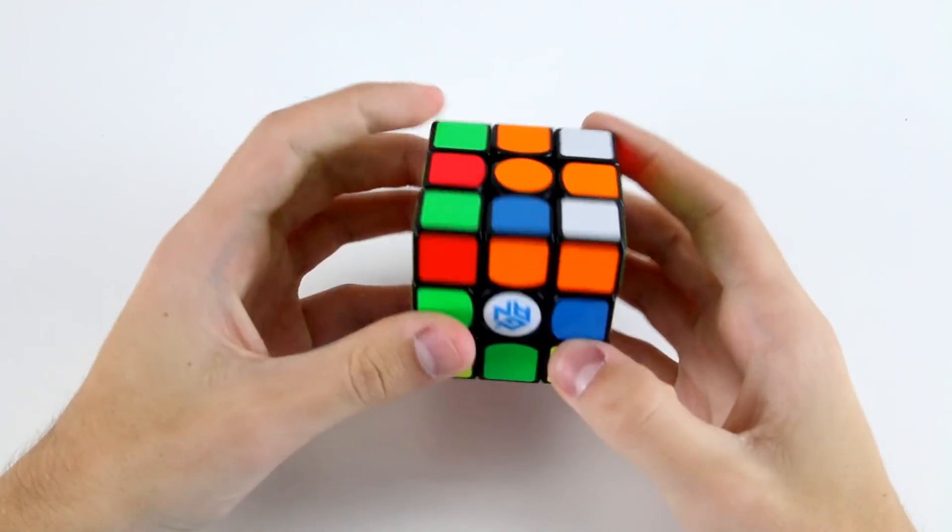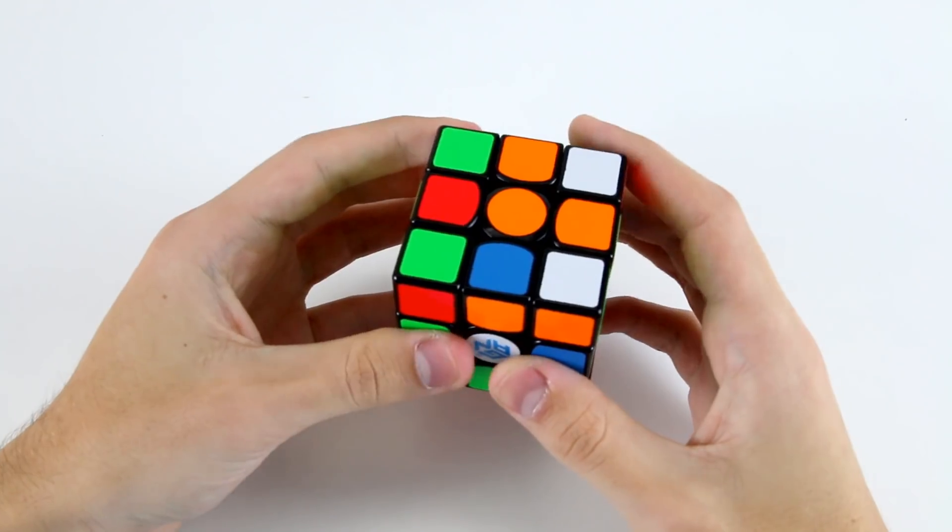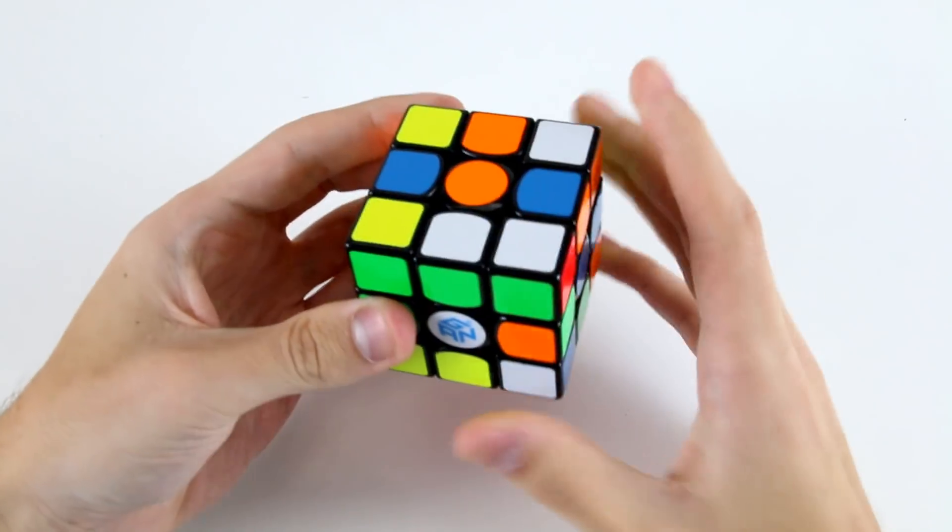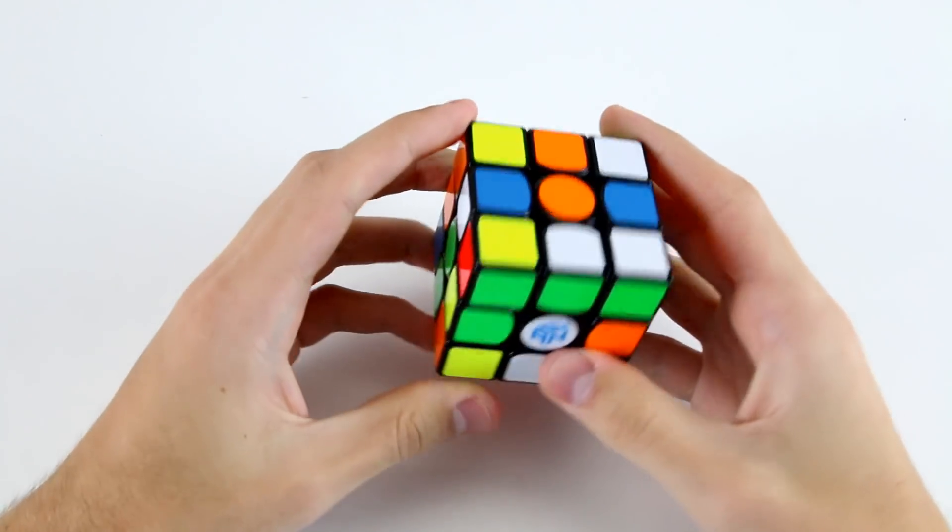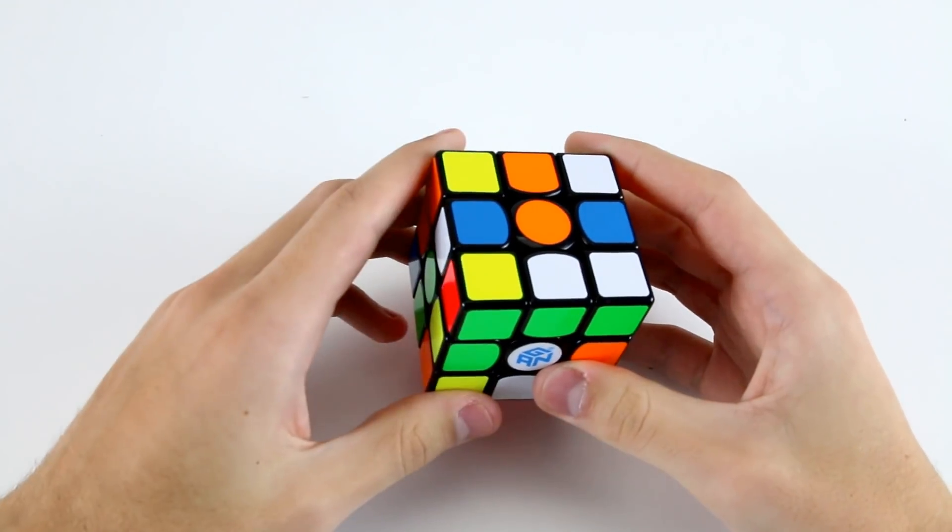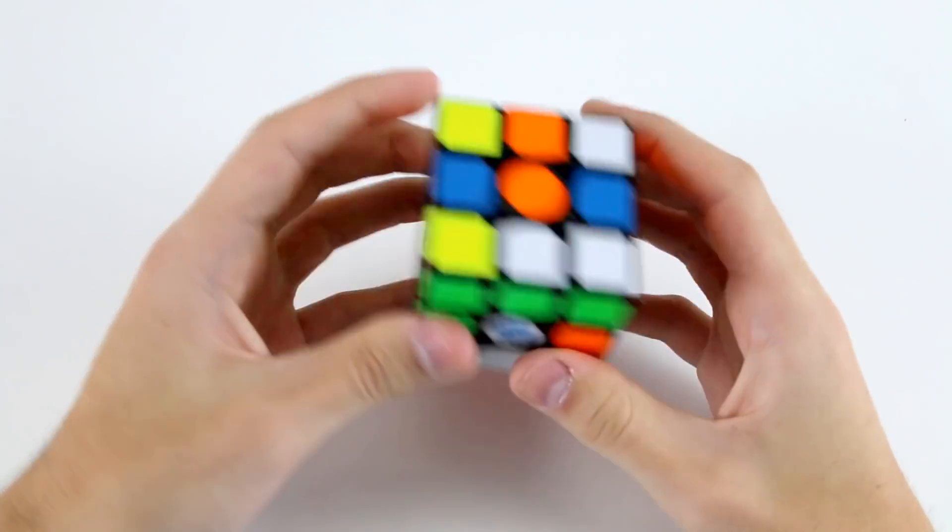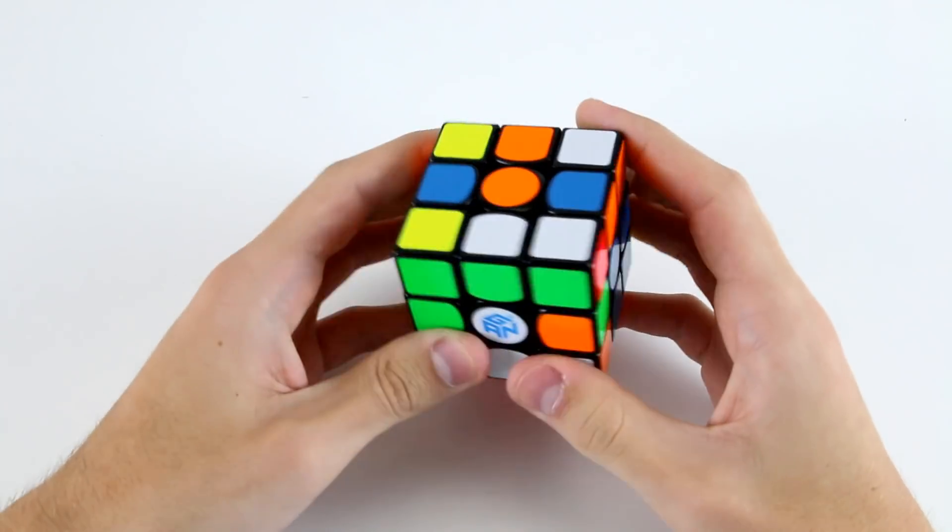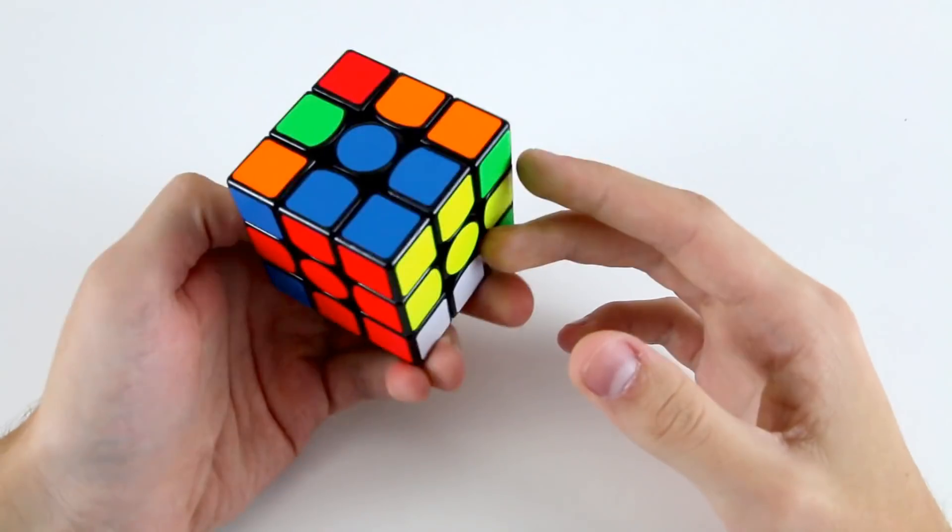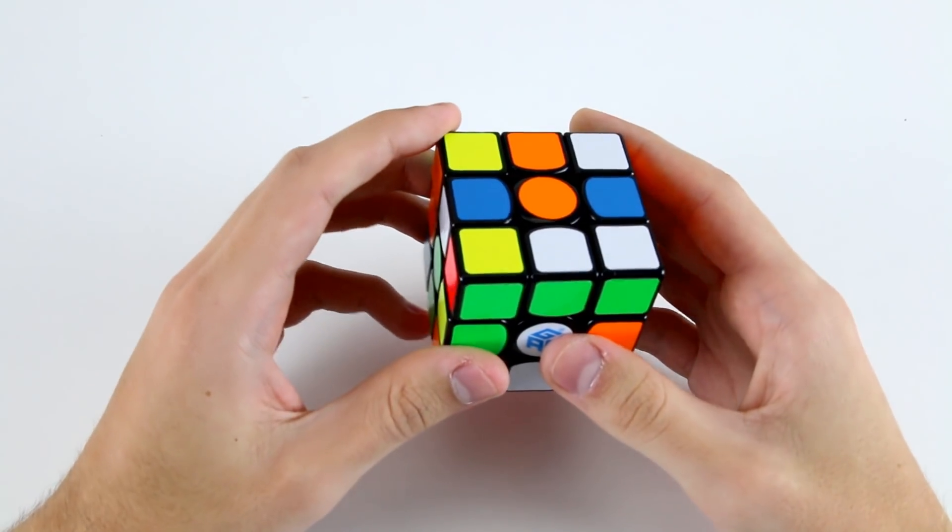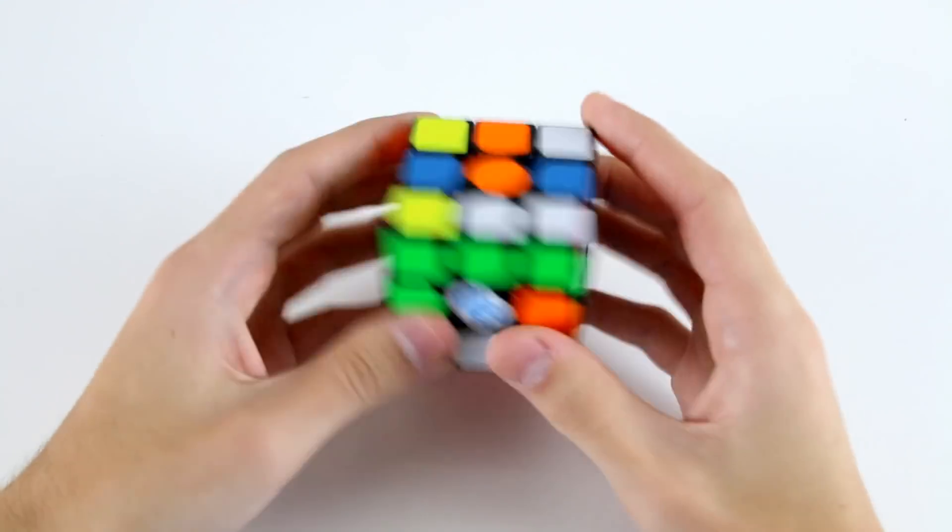And then do something like U' L F2 L' D2. That wasn't super efficient but in the inspection time that I had there that was the way I planned that cross but let me know if you find a more efficient way to do that extended cross but I thought it was reasonably finger trick friendly.